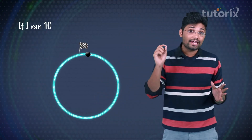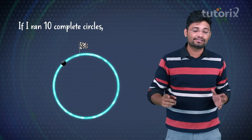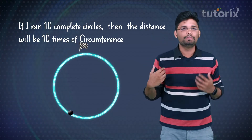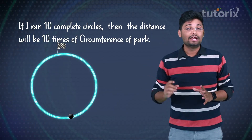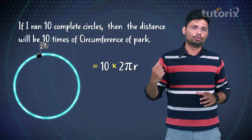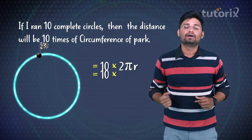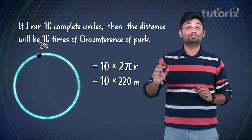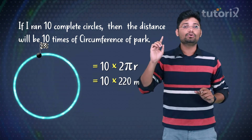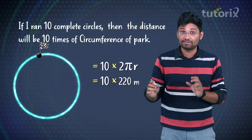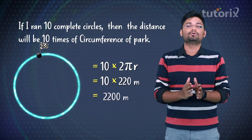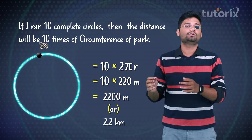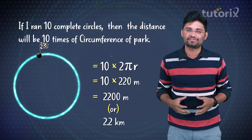Now if I ran for 10 complete circles, then the distance ran by me will be 10 times of 2πr. And 2πr is 220 meters, so this will be 10 into 220, which is 2200 meters or 2.2 kilometers.